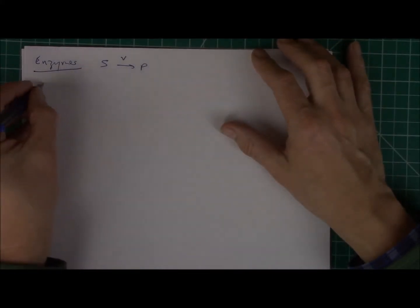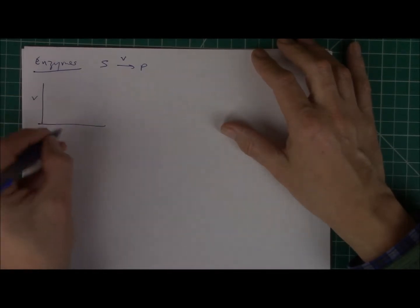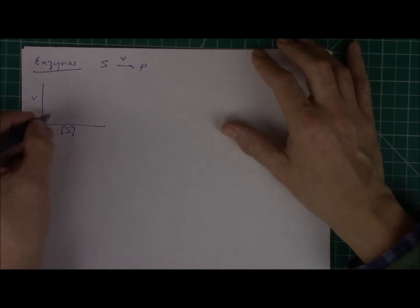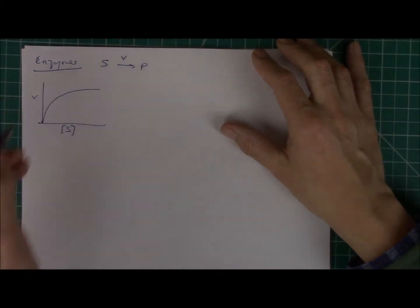Now, we can plot the reaction rate against the substrate concentration, and I'll get a curve that looks something like that.